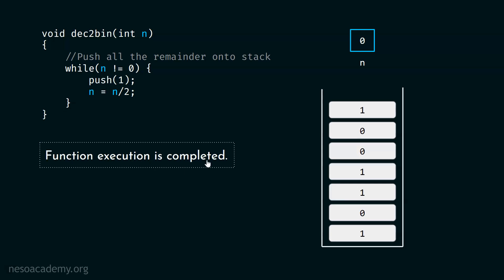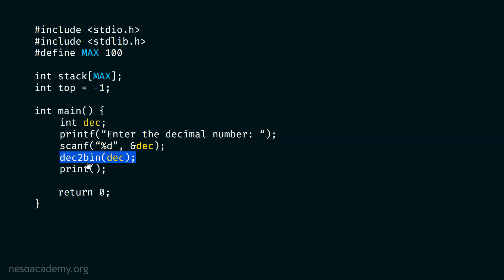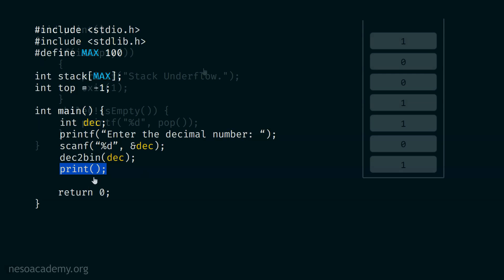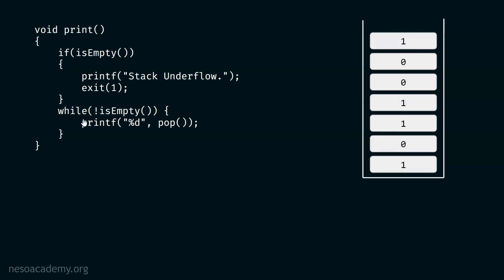You can see the current state of the stack. These are all the elements inside the stack: 1, 0, 0, 1, 1, 0, 1. After calling the dec2bin function, we will call the print function to print all the elements of the stack. Since the stack is global, we can access it in the print function as well.